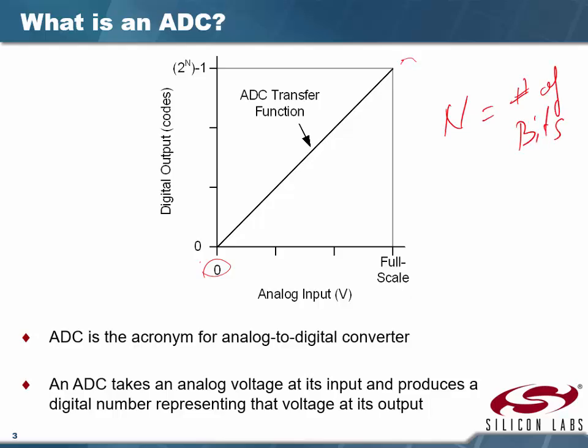The maximum number is determined by the number of bits in our ADC. We can have an 8-bit, 10-bit, or 12-bit ADC with the 8051. When we read the analog to digital port we're going to either read an 8-bit, 10-bit, or 12-bit number, and those numbers are in the special function registers.